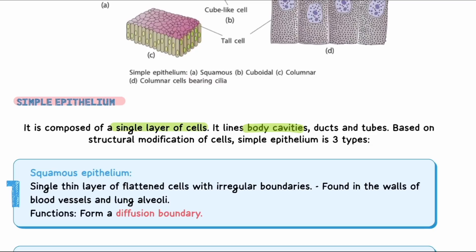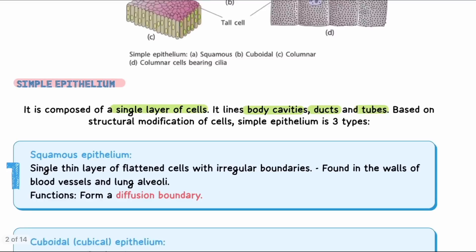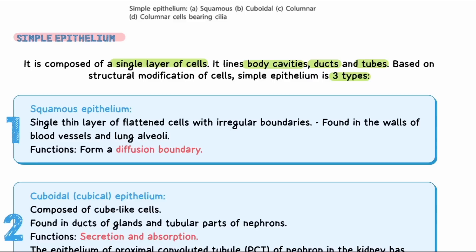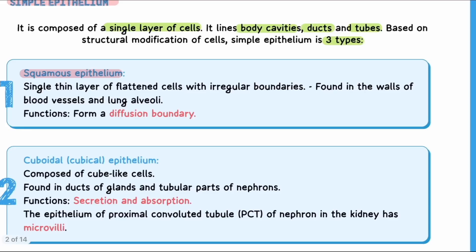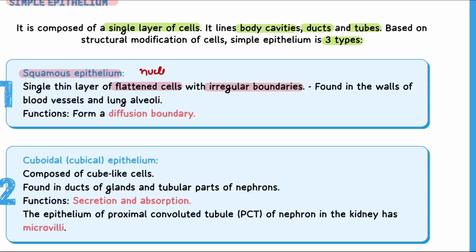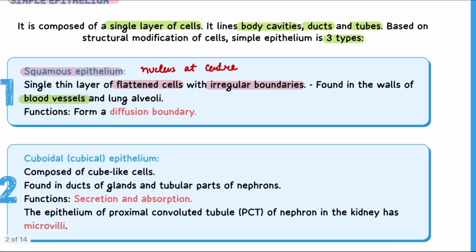Simple epithelial tissues line the body cavity, ducts, or tubes. Simple epithelial tissues are of three types. First is simple squamous epithelium — cells are flat, boundaries are irregular, and the nucleus is present in the center. Two important NCERT examples come from this: walls of blood vessels and the lining of the lungs.